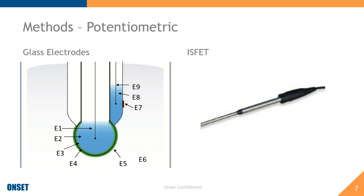ONSET uses a glass bulb electrode, which makes our pH logger suitable for many applications requiring good accuracy, short hysteresis — meaning it responds quickly to changes in pH — and faster acclimation compared to ISFET-type loggers.